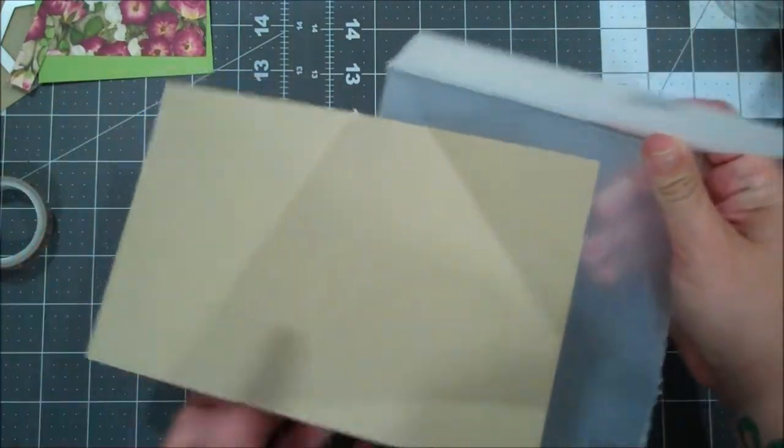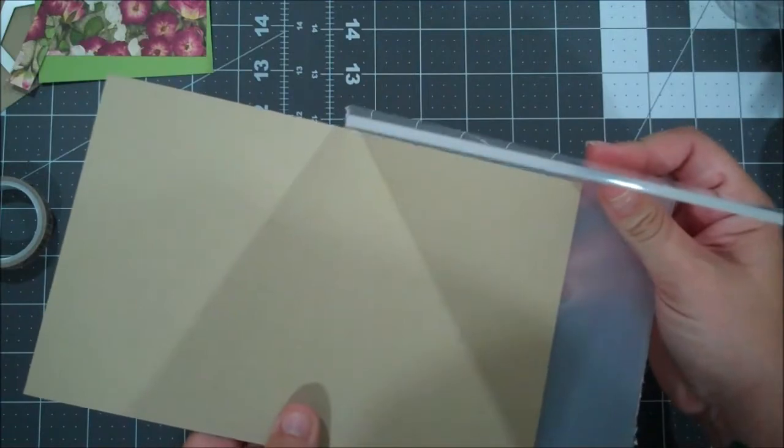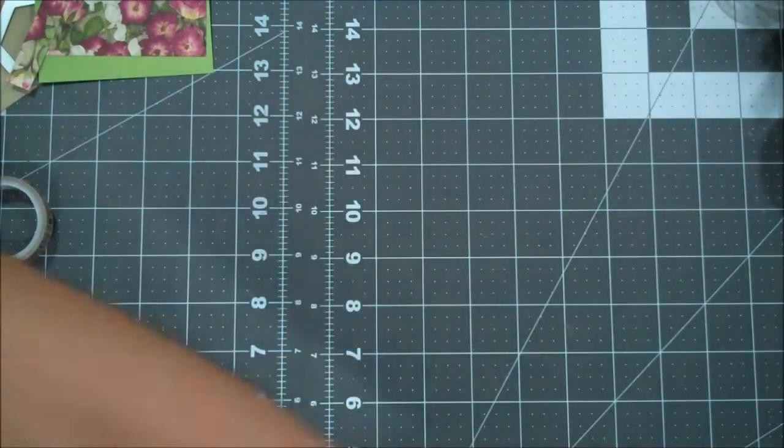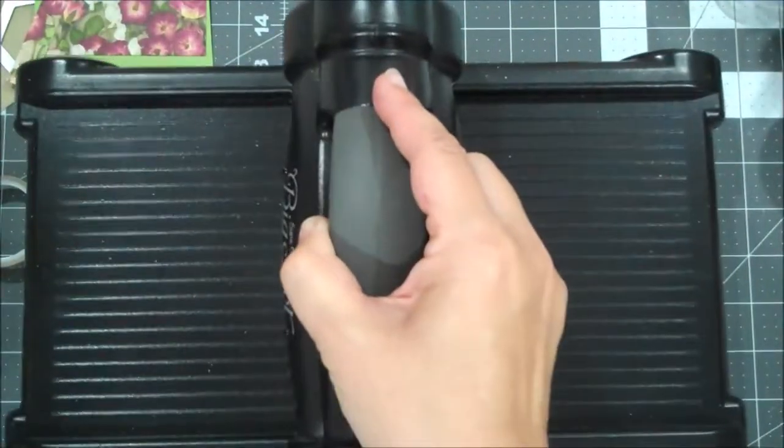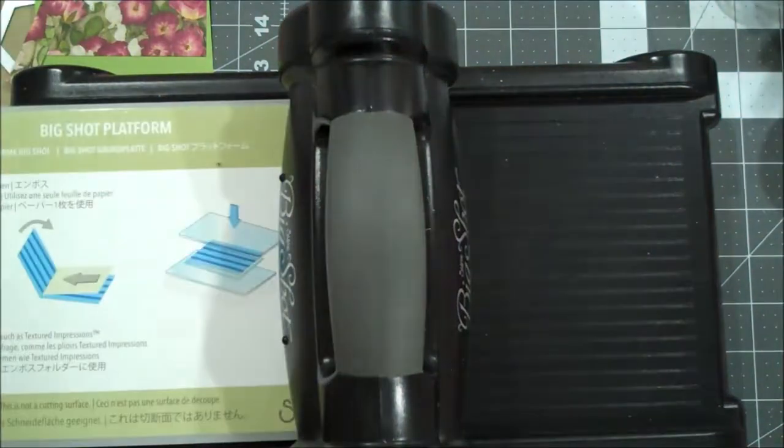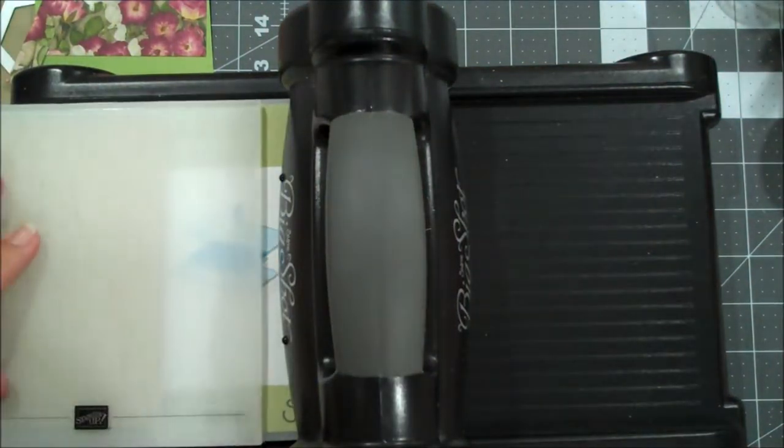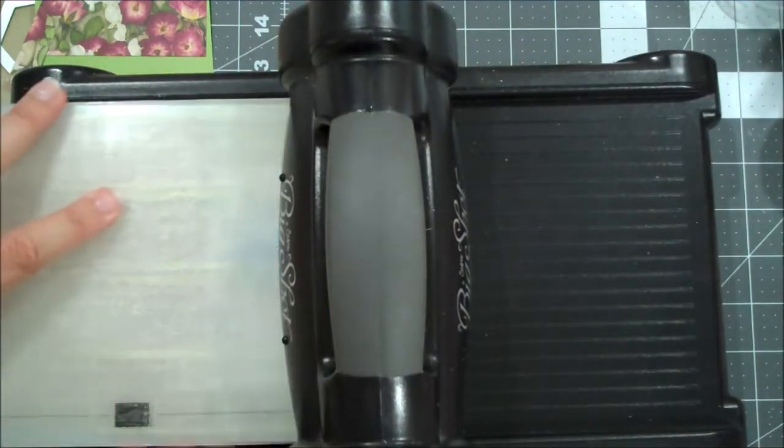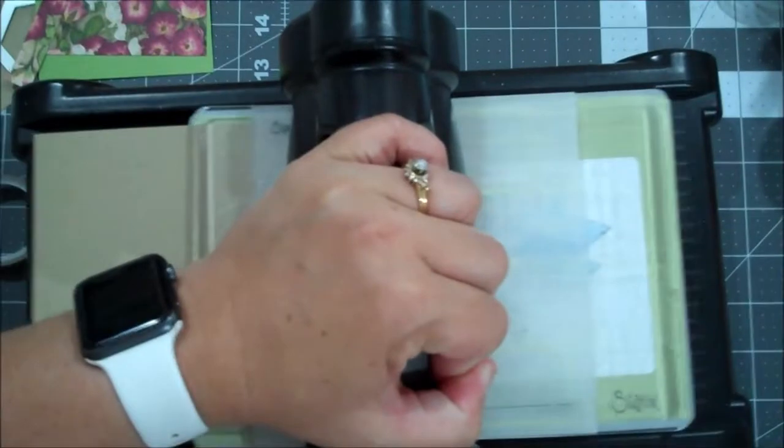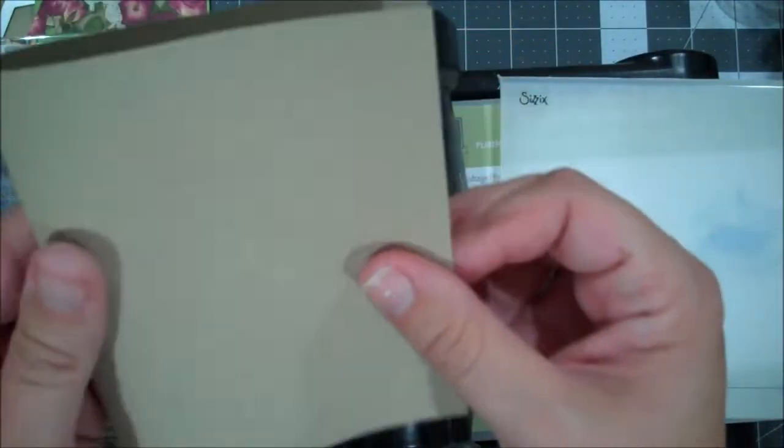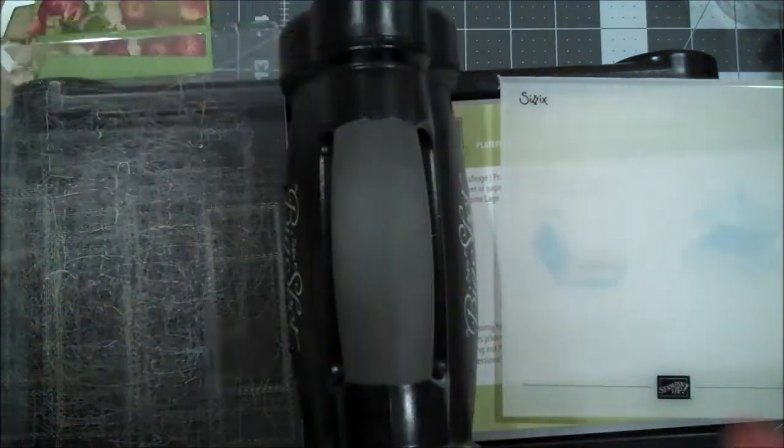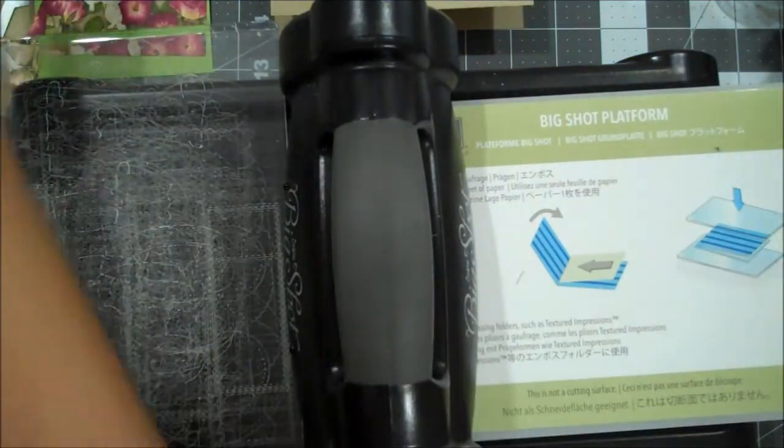Let's start with that. I'm going to take our card base here and I'm going to open my embossing folder and I'm just going to stick that in there up until that score line. Let me grab my big shot or whatever die cutting machine you have. We'll put our big shot platform in there, I'm going to set my folder in there with one plate and let's roll this through. Okay, so now you can see we just have that nice soft texture - that is definitely one of my favorite embossing folders in the catalog.